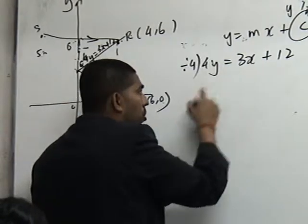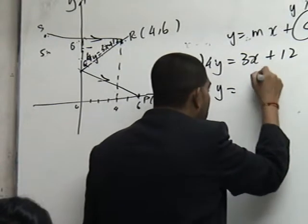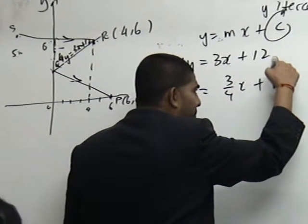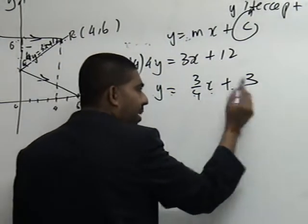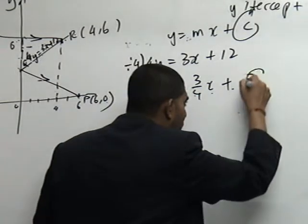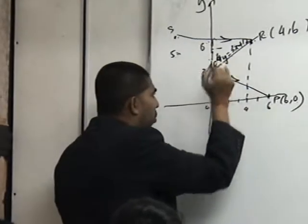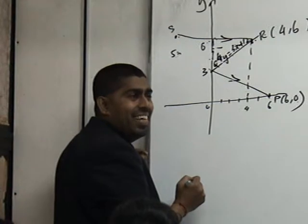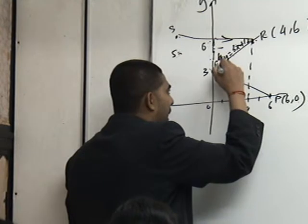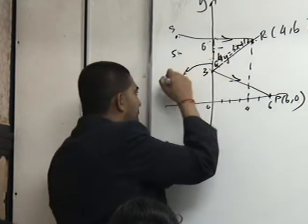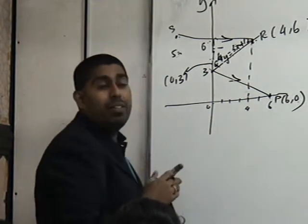How do I do that? Divide everything by 4. So what do I get here? Y, because 4 divided by 4 is 1. And over here, 3 over 4X plus 12 divided by 4 is 3. Now this is Y equals to MX plus C. So what is my Y intercept? 3. Y intercept is 3. That means what is my point Q now? 0, 3. Because my X is 0, my Y is 3. So it must be 0, 3.